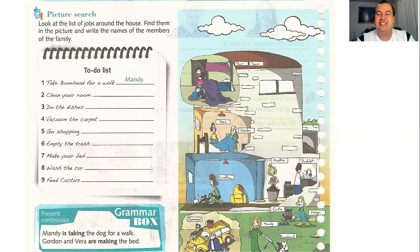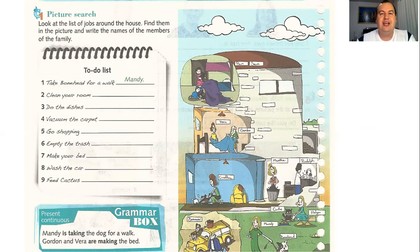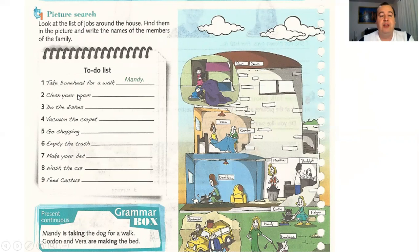E o que a gente precisa fazer? A gente tem de olhar nessa imagem — temos o nome das pessoas em cada quadradinho, indicando quem está fazendo qual atividade. Aqui do lado, a gente tem uma lista chamada To Do List. Toda vez que você vai fazer uma lista com as tarefas do dia a dia, coisas que você tem que fazer em casa, isso em inglês é chamado de To Do List, ou seja, tarefas a fazer. Qual é a sua missão? Look at the list of jobs around the house. Find them in the picture and write the names of the members of the family.